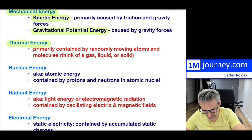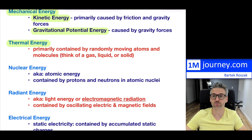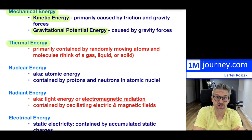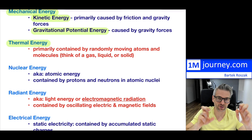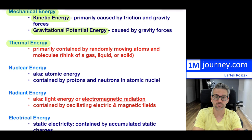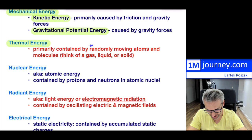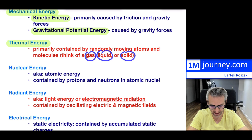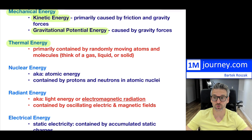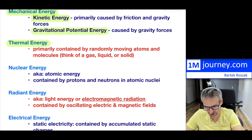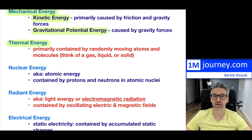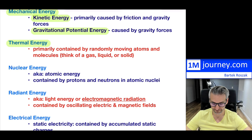You may also be introduced to other types of energies. Here is another one: thermal energy. Thermal energy is sometimes called heat energy, but that's not necessarily the best term — thermal energy is a much better term. It is primarily contained by randomly moving atoms and molecules. The key word is random motion with regards to any atoms and molecules — whether you think about gases, liquids, or solids. Those motions are going to be related to thermal energies.